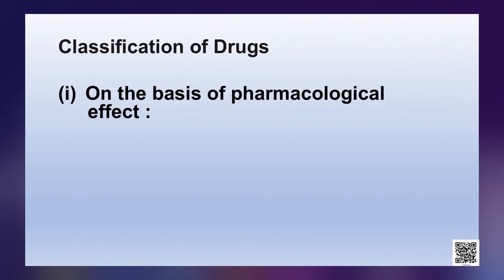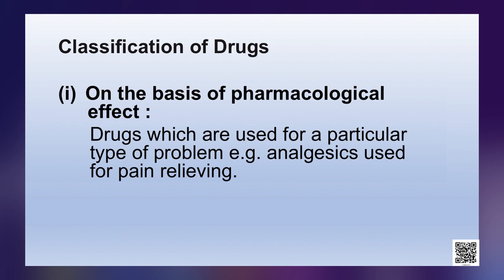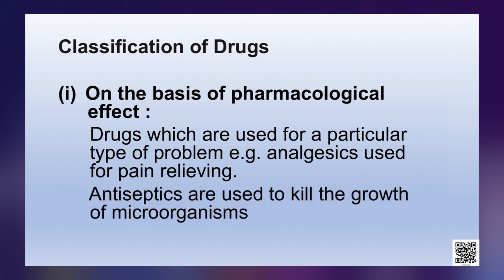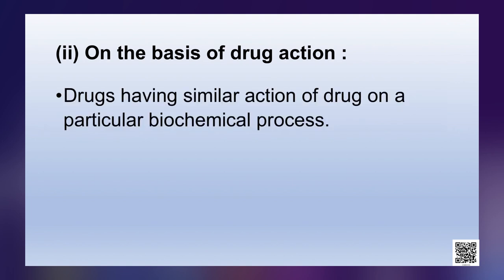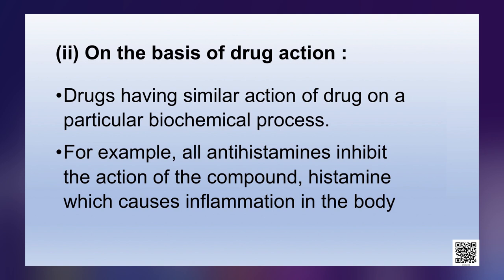Drugs can be classified into mainly four groups. First is on the basis of pharmacological effect — drugs used for a particular type of problem. For example, analgesics used for pain relieving are kept in this category; antiseptics are used to kill the growth of microorganisms. Second is on the basis of drug action — drugs whose action is the same on a particular biological process.